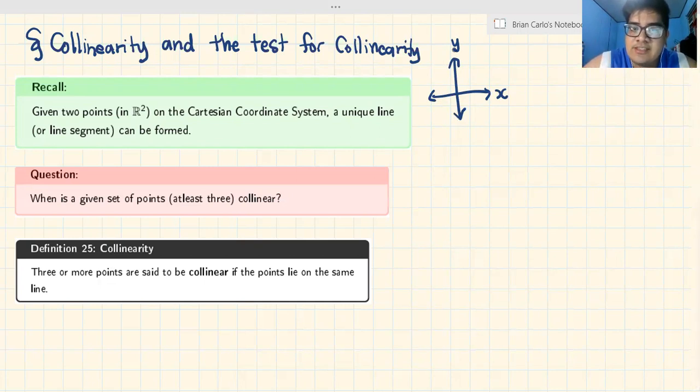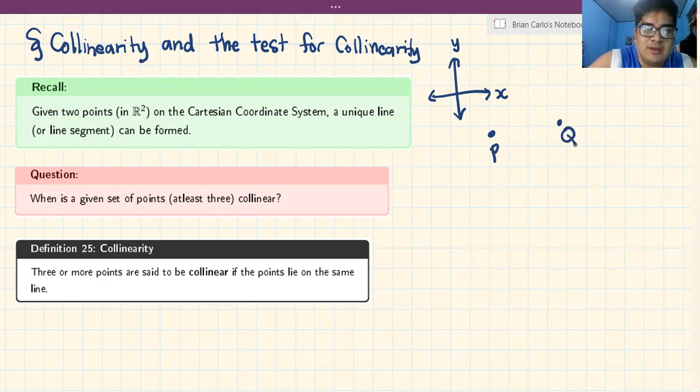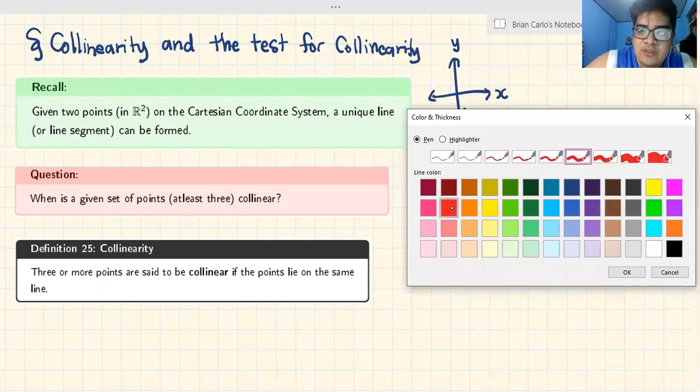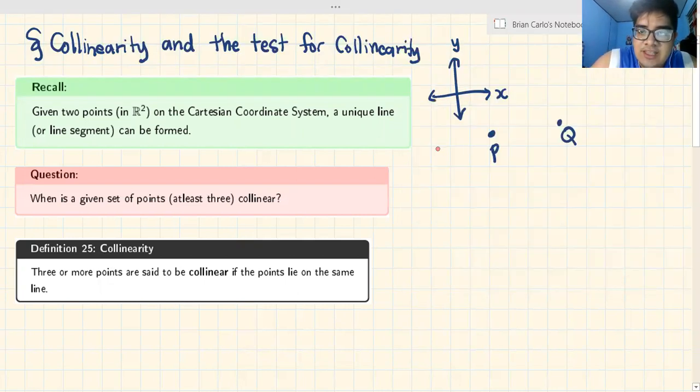When you have two points on the Cartesian plane, there is a unique line segment that can be formed. Let's say this is point P and this is point Q. There's a unique line that passes through those two points.